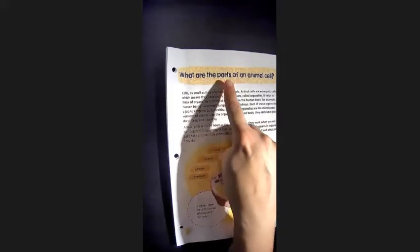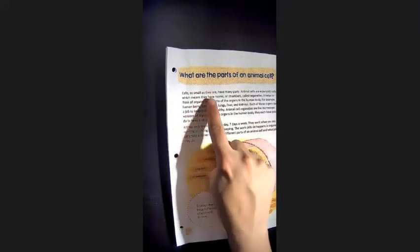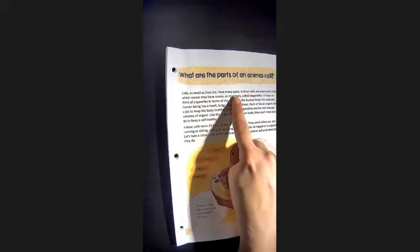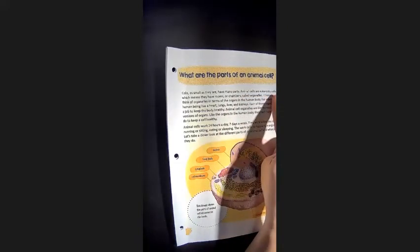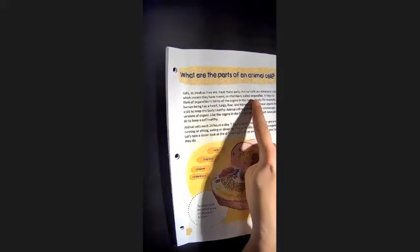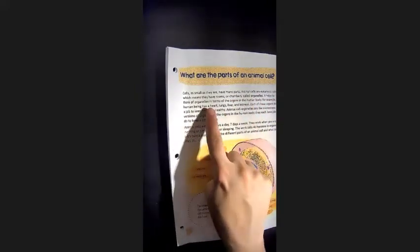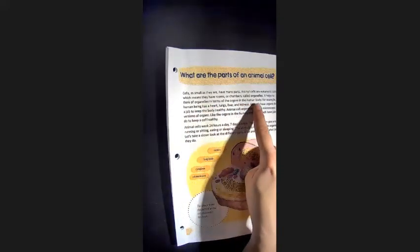What are the parts of an animal cell? Cells, as small as they are, have many parts. Animal cells are eukaryotic cells, which means they have rooms or chambers called organelles. It helps to think of organelles in terms of the organs in the human body.